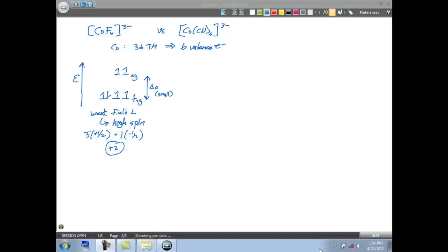For our CN minus complex, cyanide is a strong field ligand. With a strong field ligand, it means we're gonna have a large delta O. So our T2G, EG splitting is very large. So in this case, delta O is a large value.